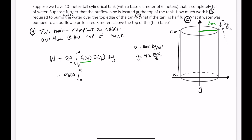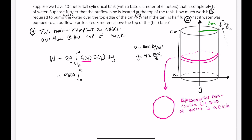Now let's figure out A(y), the area of a representative cross-section. I'll draw a representative slice of the water in the tank. Looking at it in 2D, it makes a circle. The y-axis runs right through the middle, so the radius of the circle is 3 meters. The area of a circle with radius 3 is pi r squared, so A(y) equals pi times 3 squared, which gives 9π. That's the area of a slice of water.